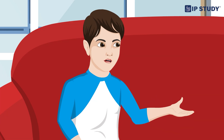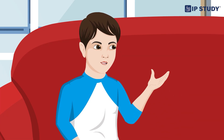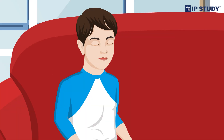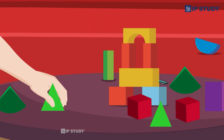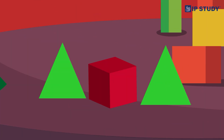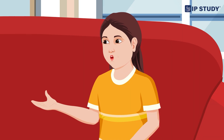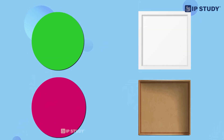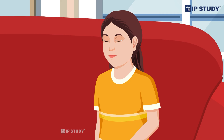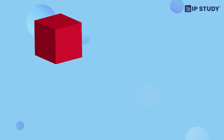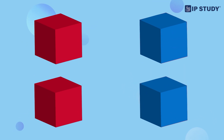Urvashi, I noticed something — these shapes can make patterns too! Really? Show me what you mean. Look, if I put a triangle, then a square, then a triangle again, it makes a pattern. That's wonderful, Amal! Let's try making more patterns. How about circle, square, circle, square? Perfect! And we can also make patterns with colors — see, red cube, blue cube, red cube, blue cube.